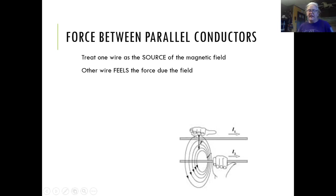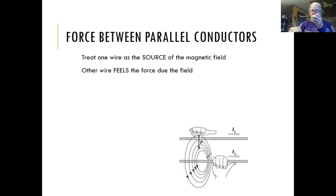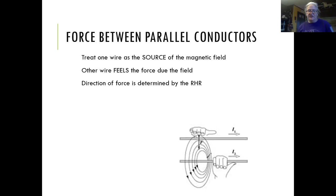To find the field direction for the source wire, we use the curly right-hand rule. You point your thumb in the direction of current flow in the wire, then circle the wire with your hand. If you're above the wire, the field points toward you; on the back side, it points down; on the bottom, it points toward you. Your fingers circle around the wire in the direction the field is circulating. The direction is determined by the right-hand rule.